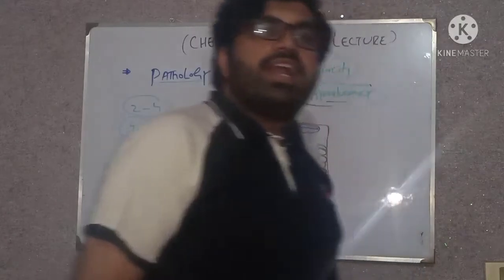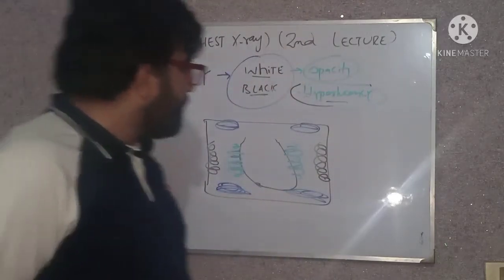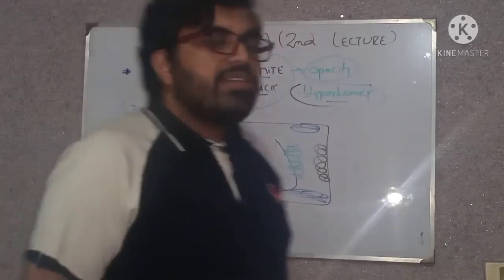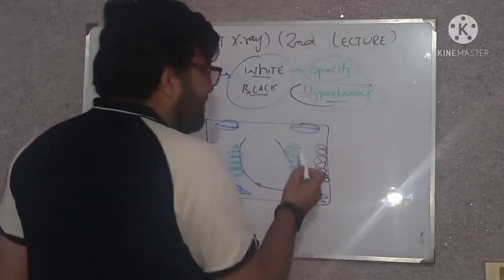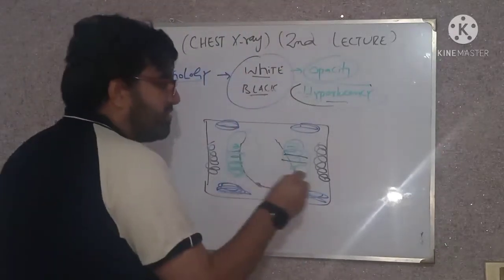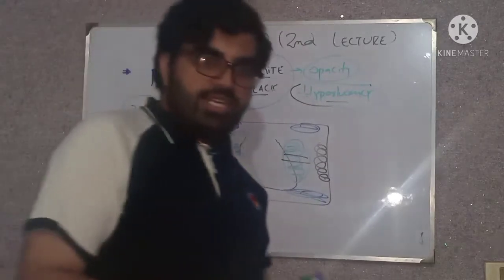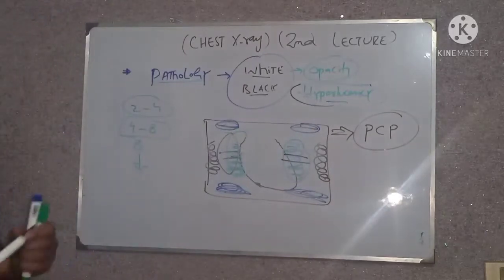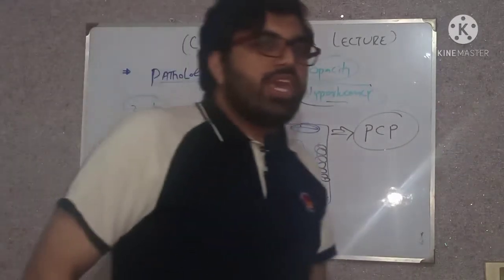If you can locate the lesion properly, you can diagnose the case very quickly. A patient diagnosed with HIV, CD4 count less than 200, with cough and fever for the last four days — X-ray shows bilateral opacities predominantly centrally in the perihilar region. The distribution of the lesion around the hilum in an HIV patient with cough and fever — the answer is Pneumocystis pneumonia (PCP), also known as Pneumocystis jirovecii or Pneumocystis carinii pneumonia.